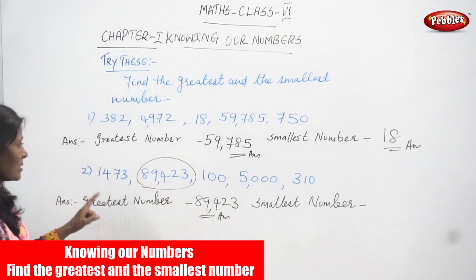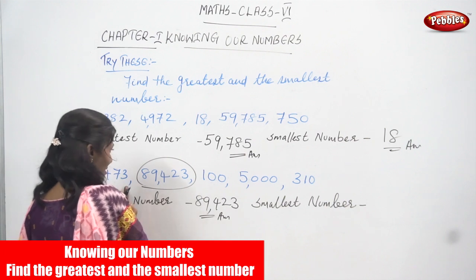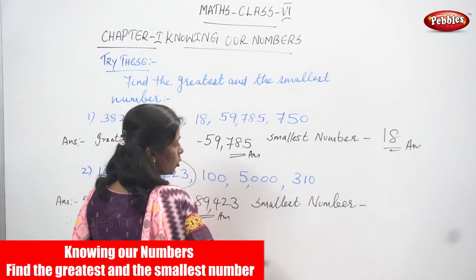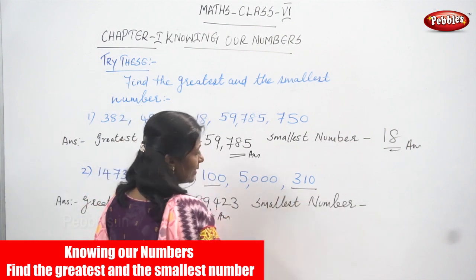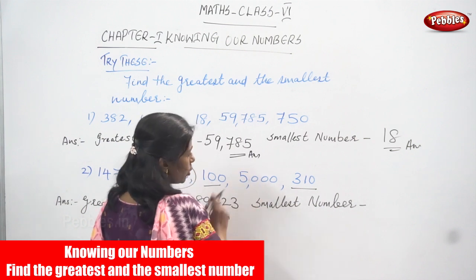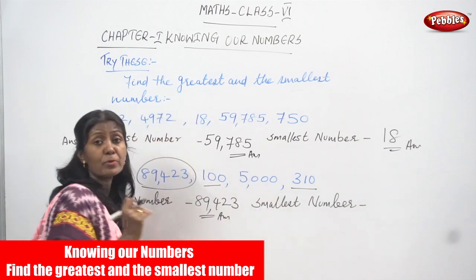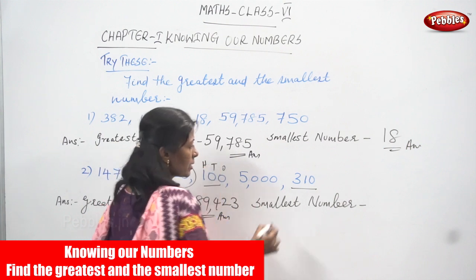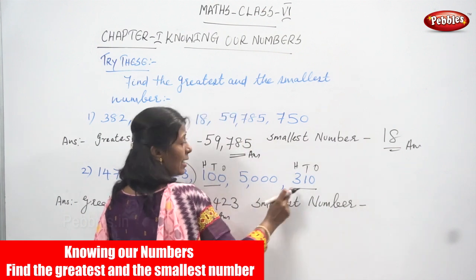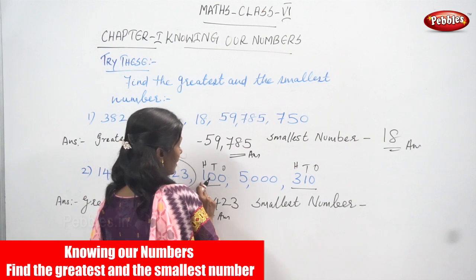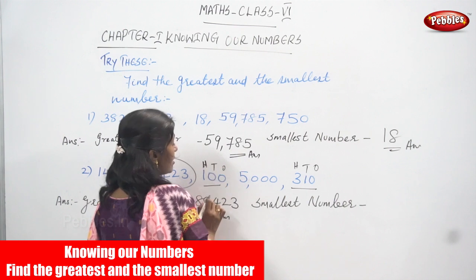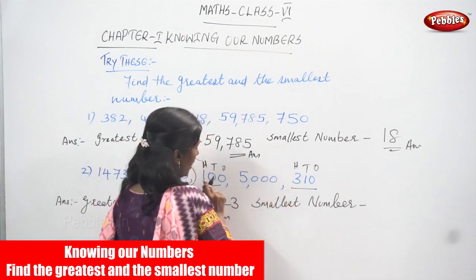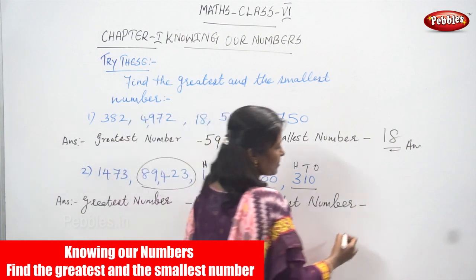And the smallest number — look at this. 1,473 is 4 digits. 100 is a 3-digit number. 5,000 is 4 digits. 310 is 3 digits. So, 100 and 310 are both 3-digit numbers. But you have to write only the smallest number. Now you are going to consider the place value. If the number of digits is similar, you must give the second priority to the place value. Here, for 100: ones, tens, hundreds. For 310: ones, tens, hundreds. You have to check the hundreds place value. In the hundreds place, 100 has the digit 1, and 310 has the digit 3. Comparing 1 and 3, the smallest number is 1. So, the smallest number is 100 in this series.